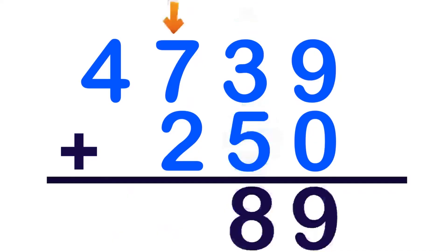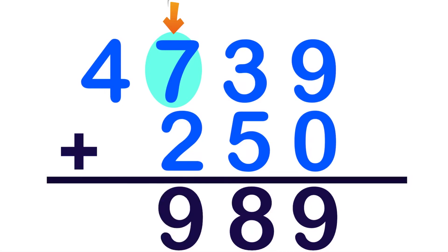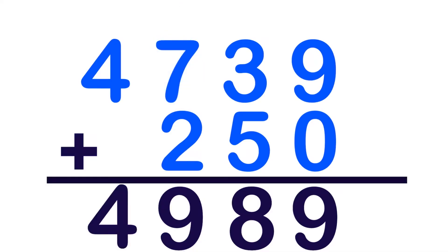Let's proceed to the 100's place. 7 plus 2 — 7 on your mind: 7, 8, 9. So, 7 plus 2 is equal to 9. Again, we don't have a number at the bottom of digit 4, so we will bring down digit 4. The sum of 4,739 and 250 is 4,989.